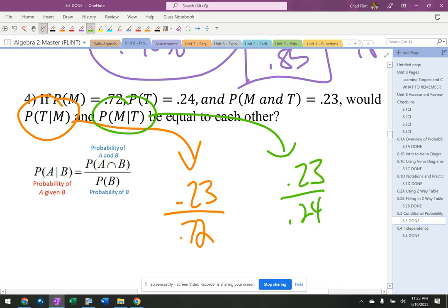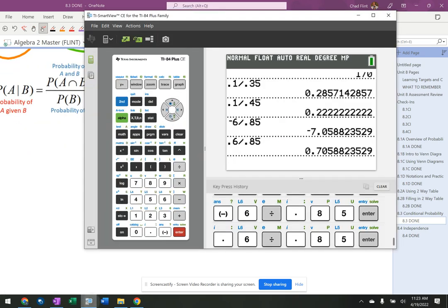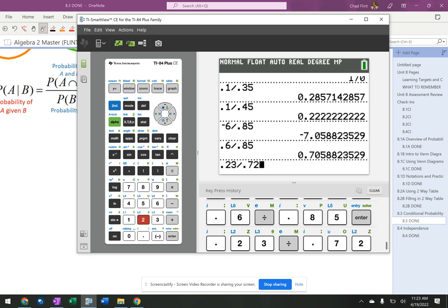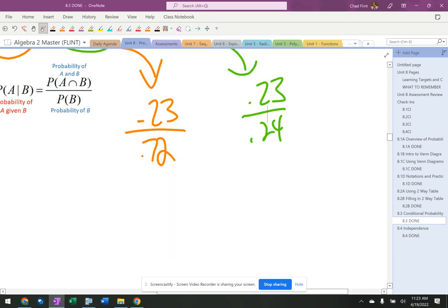So that's what I have going on there. I'm going to divide both of those, and they're not going to be at all the same. 0.23 divided by, or was it 0.24? 0.23 divided by 0.72, 0.3194.